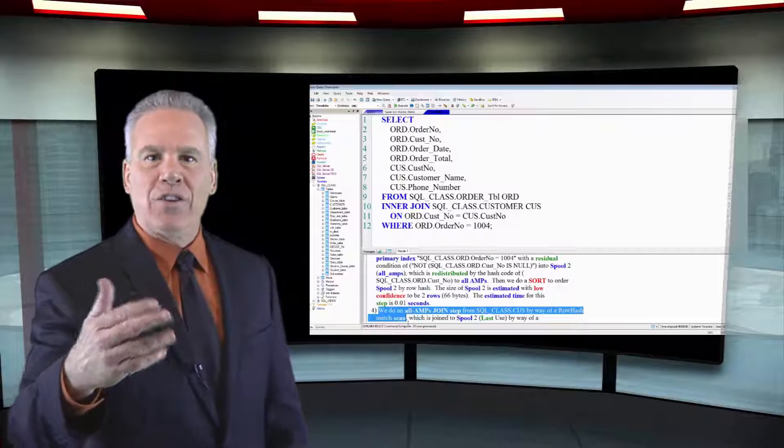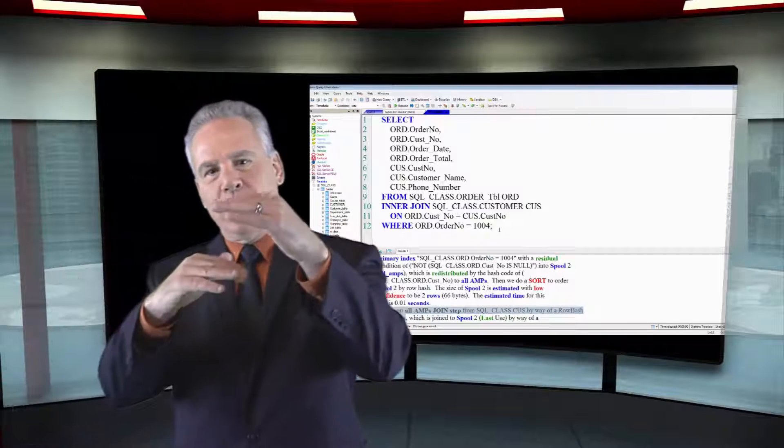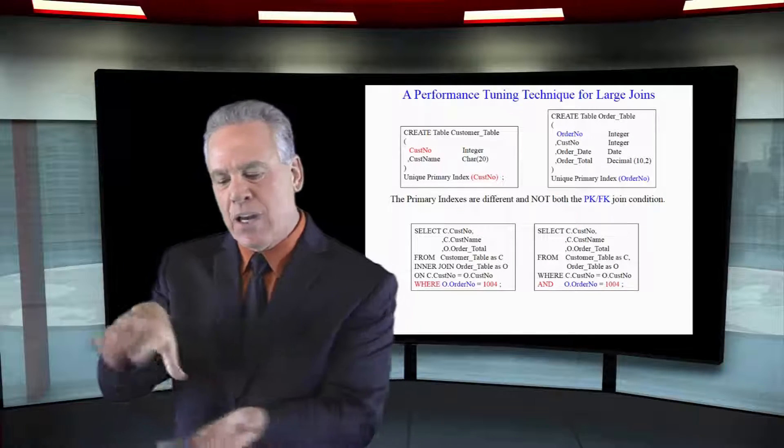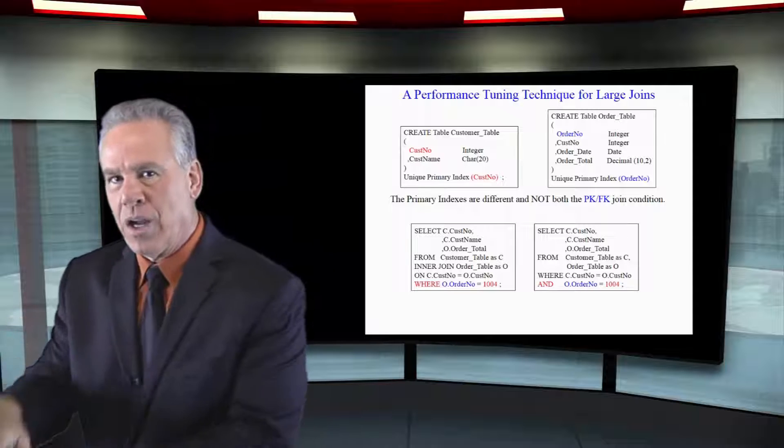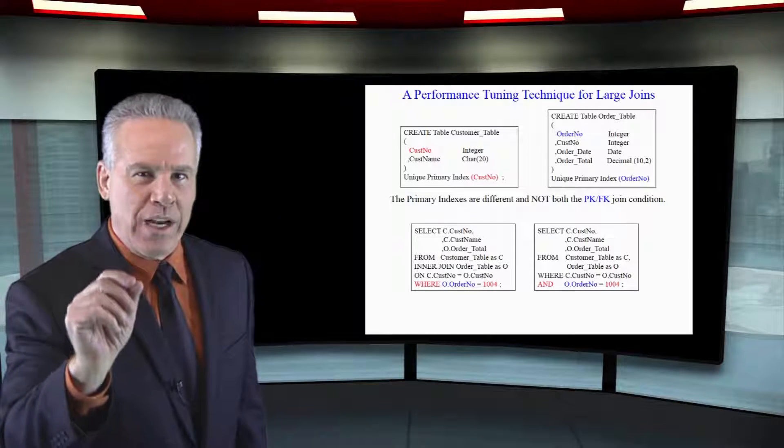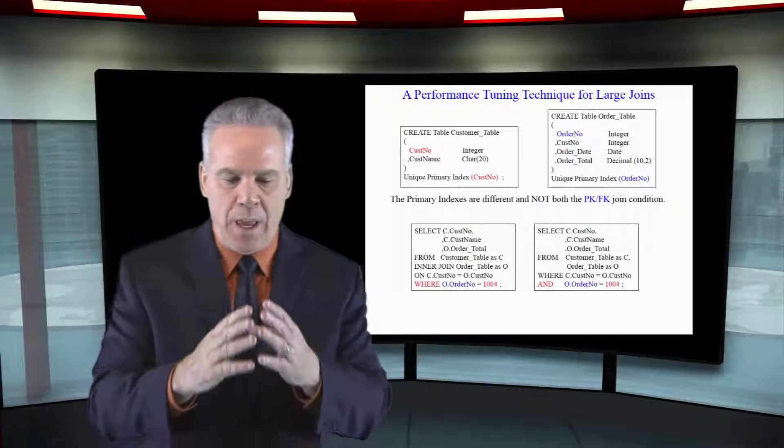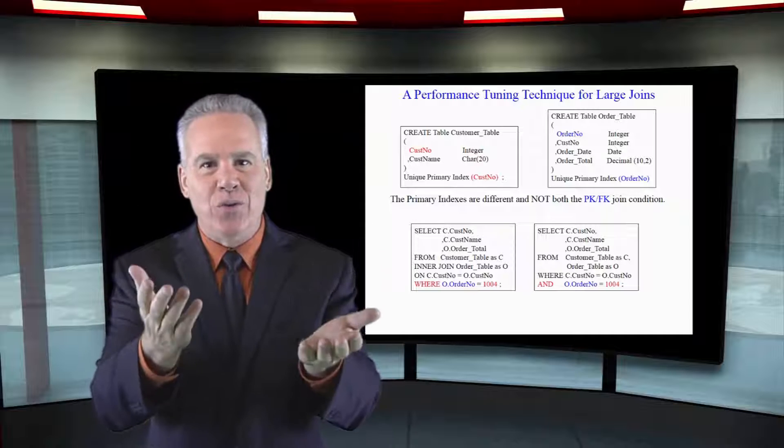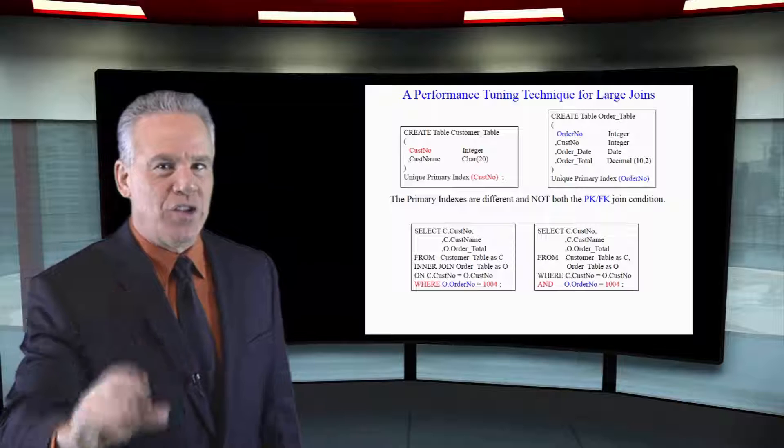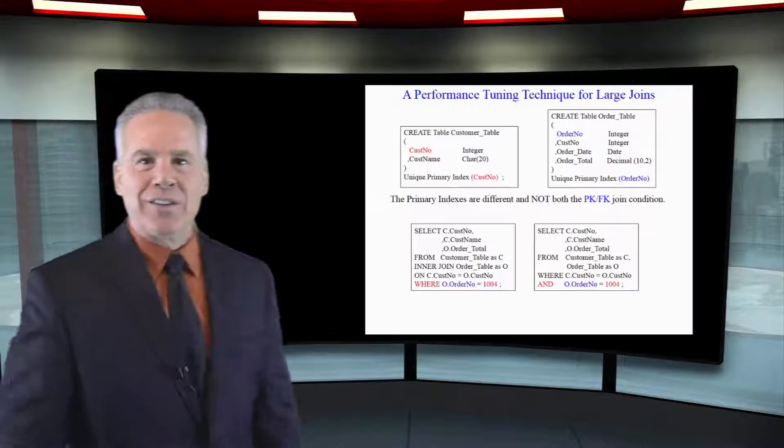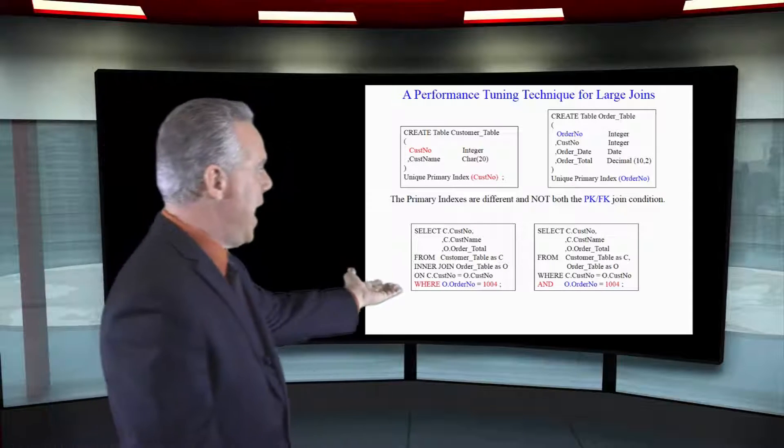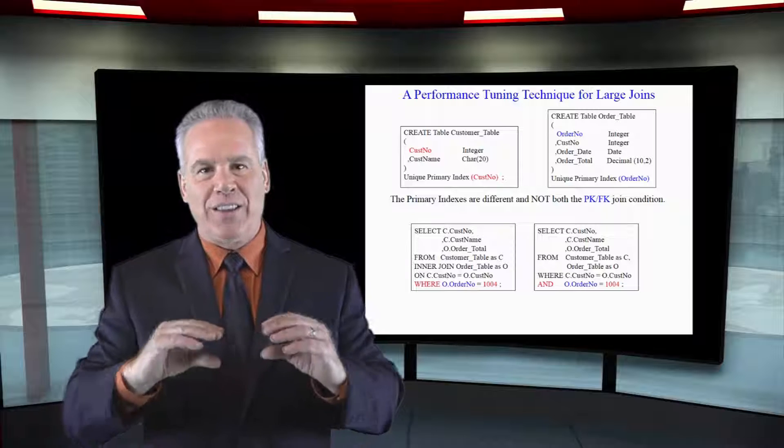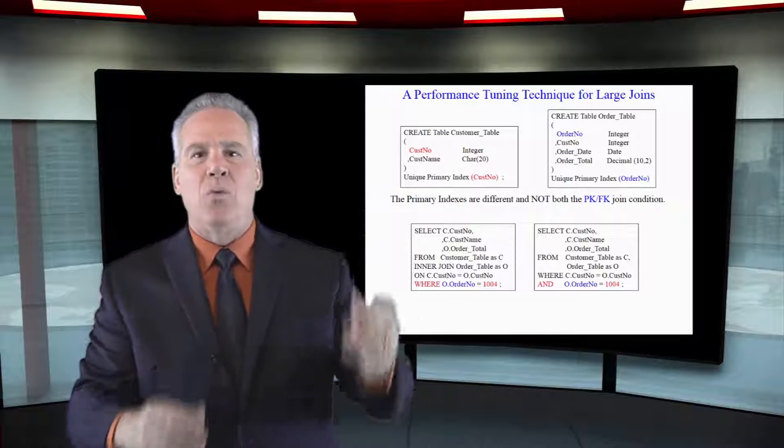Some of you like the traditional syntax where you separate the two tables with a comma and then you say where customer number equals customer number and order number equals 1004. Makes no difference on an inner join which syntax you use, and it makes no difference on this join if it's an additional where clause or an additional and clause. The parsing engine will take the least expensive path and it's going to go get the row first and then match it with its counterpart.